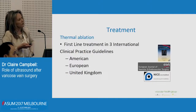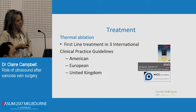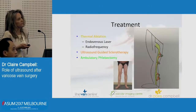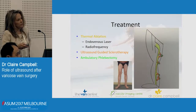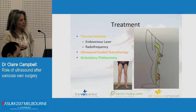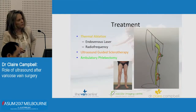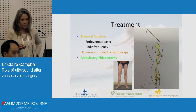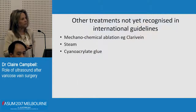Going back to modern vein care — first-line treatment now in three international guidelines is thermal ablation. I divide the patient up into the visible tributaries, which are the green ones that we can do phlebectomy on — this is only required 5% of the time. You've got the trunk vein for the thermal ablation, and then you've got the tributaries beneath the skin for the injection. I don't inject visible tributaries.